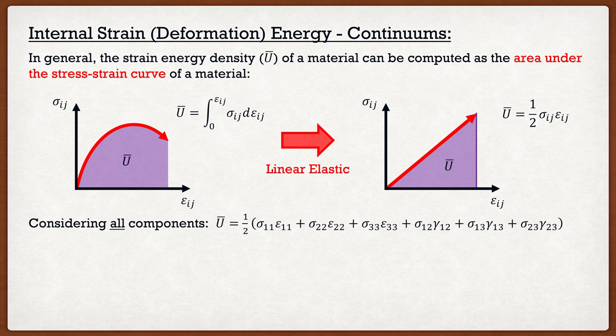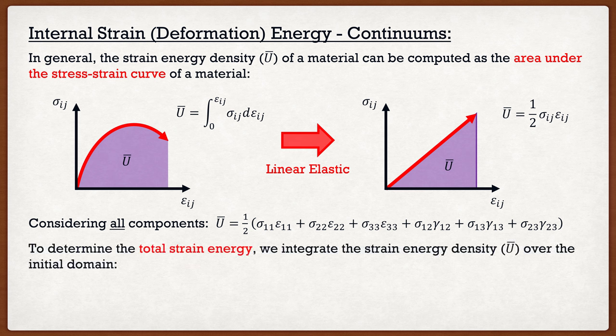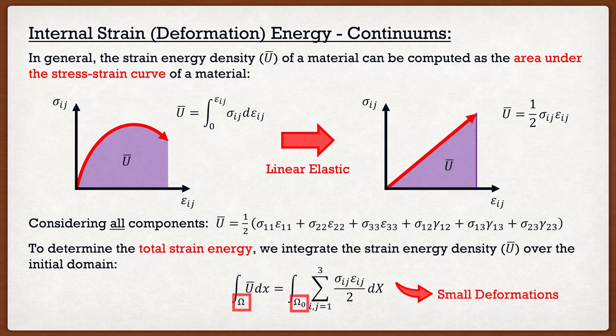This is the strain energy density, but it isn't exactly what we're after. In the formula for strain energy, we integrate that strain energy density to get the total strain energy of the system. We simply integrate our strain energy density over the initial domain. You might ask: why are we integrating over the initial domain rather than the deformed domain? Well, we don't know the deformed domain — that's what we're trying to determine. It is valid because we are assuming small deformations; therefore, the volume before and after deformation isn't going to change very much, so our error will be very little.